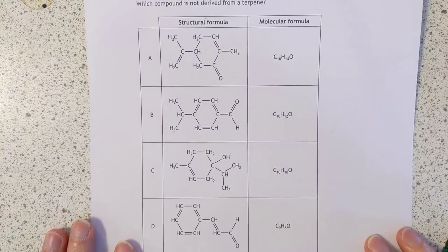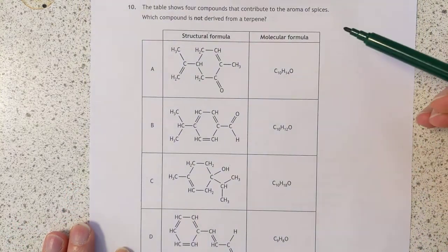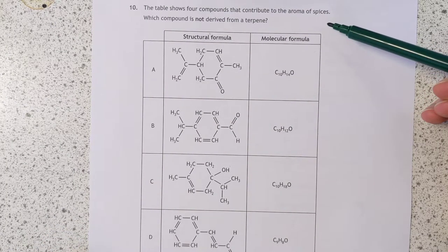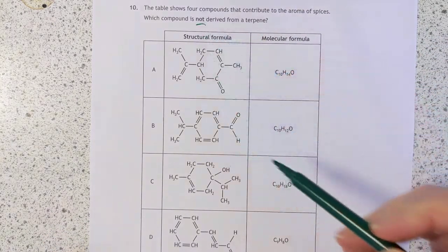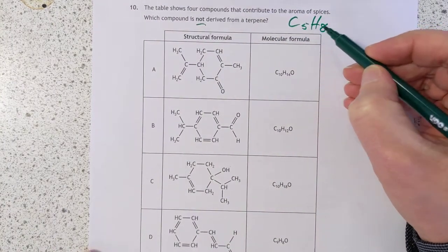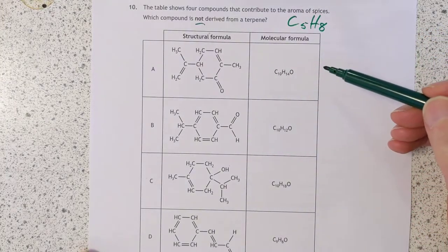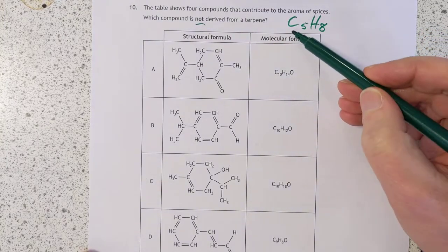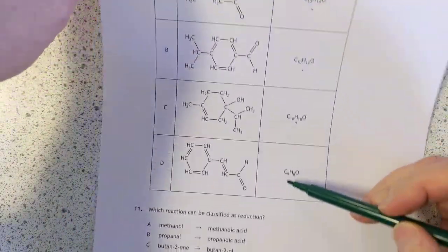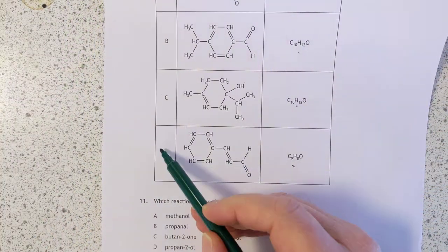Question 10: This table shows four compounds that contribute to the aroma of spices. Which one is not derived from a terpene? Terpenes are all based on C5H8. So basically we're looking for a molecule which is not a multiple of this. 10, 10, 10, and 9. I'm going to go with D.